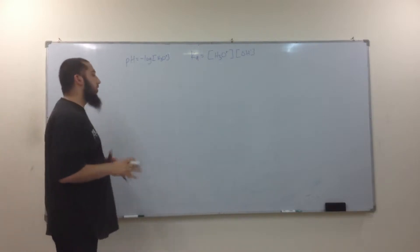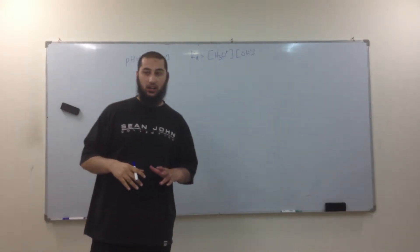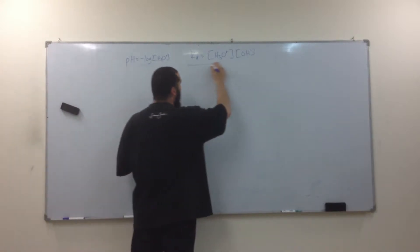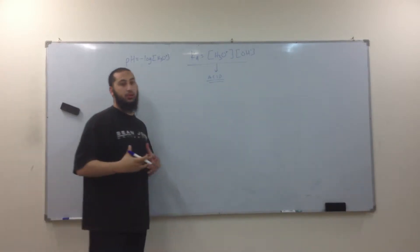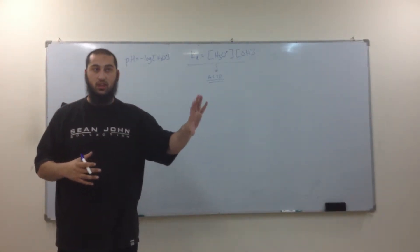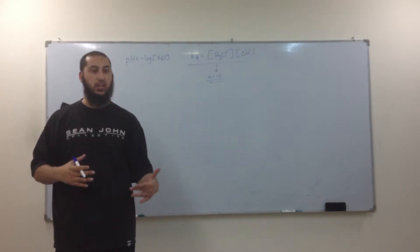One thing that has to be really clear in your brain. This Ka is measurement of the acid. Every acid has its own Ka number that belongs to the acid. It never changes. As long as you have that acid, that's your Ka.